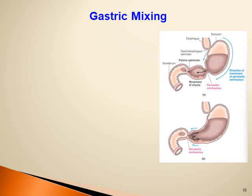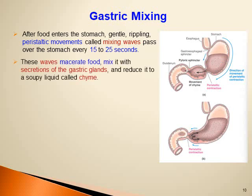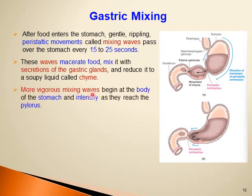For gastric mixing, gentle rippling peristaltic movements called mixing waves pass over the stomach every 15 to 25 seconds, moving from the fundus towards the pyloric antrum. These waves macerate food, mix it with gastric juice, and reduce it to a soupy liquid called chyme. More vigorous mixing waves then begin in the body of the stomach.